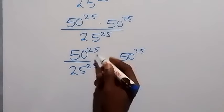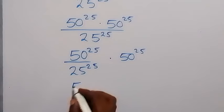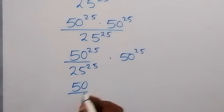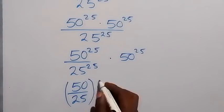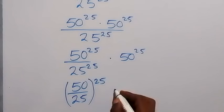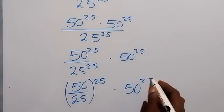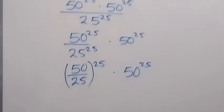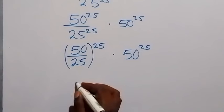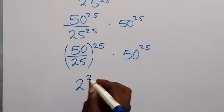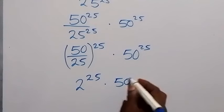Then, from here, we can write this together as 50 over 25 raised to power 25, then times 50 raised to power 25. And from here, we can divide this, 50 divided by 25, that's 2 raised to power 25 times 50 raised to power 25.